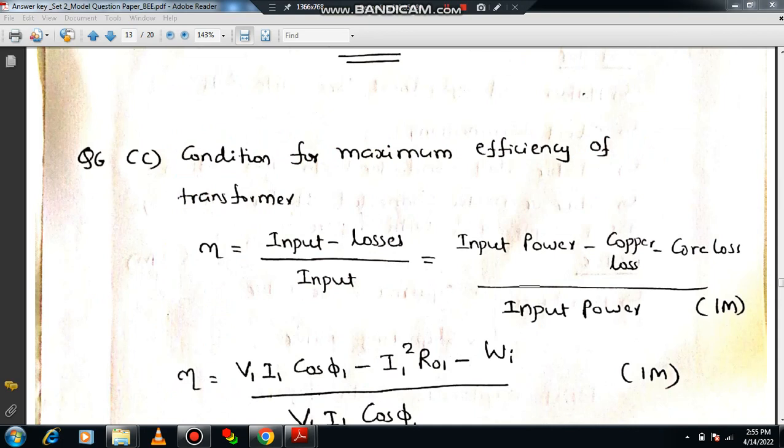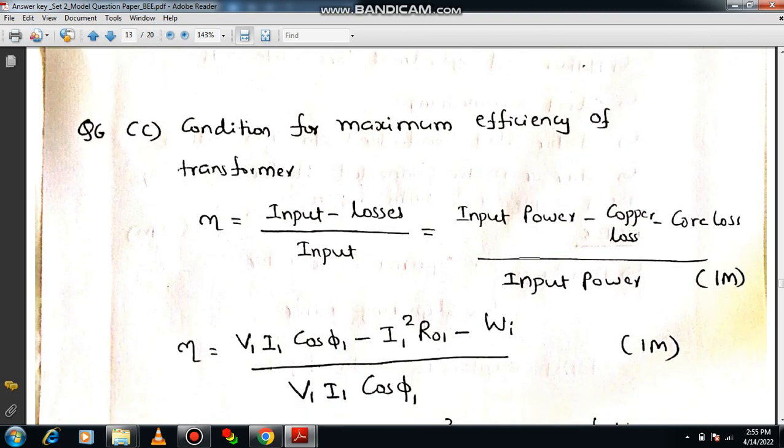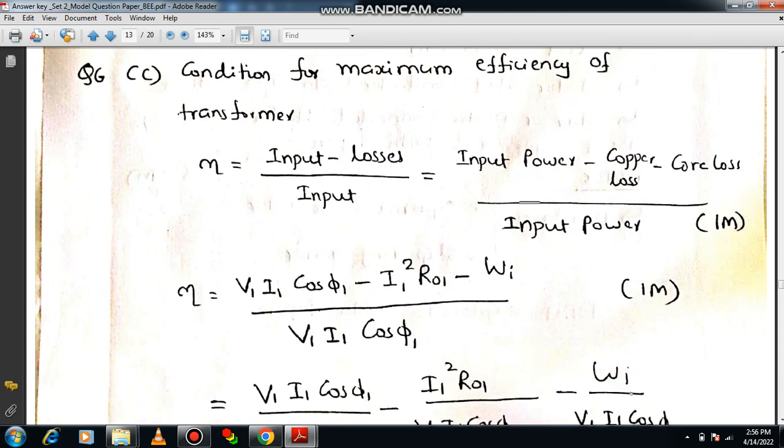You know that transformer is a static device. It shows highest efficiency compared to other type of rotating machine. What is efficiency? It is a ratio of output to the input. The output can be written as input minus losses. Therefore input minus, what are the major losses in transformer? The first one is copper loss. Another one is core loss. That means input power minus copper loss minus core loss divided by input power. So if you write like this you will be getting one mark.